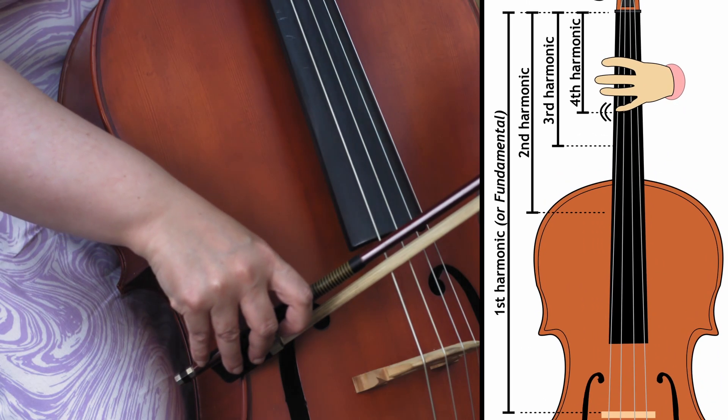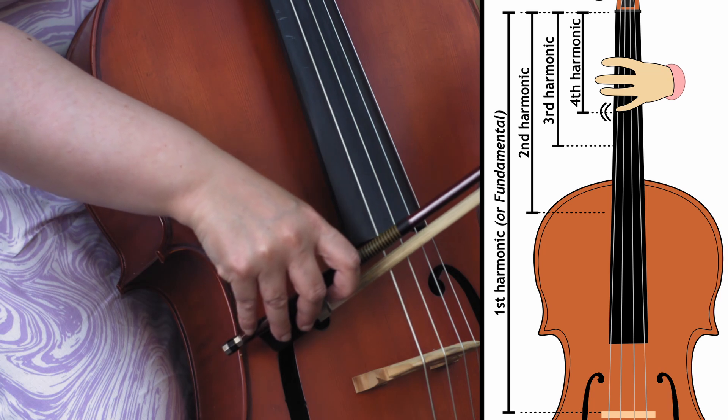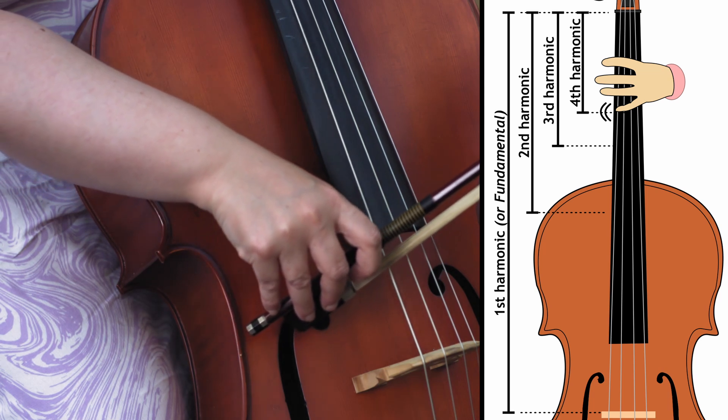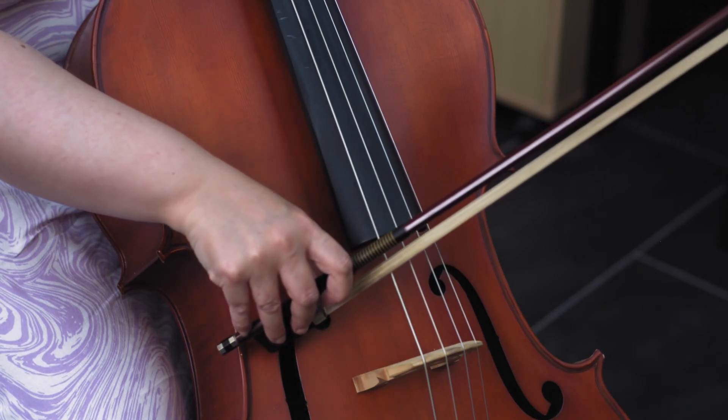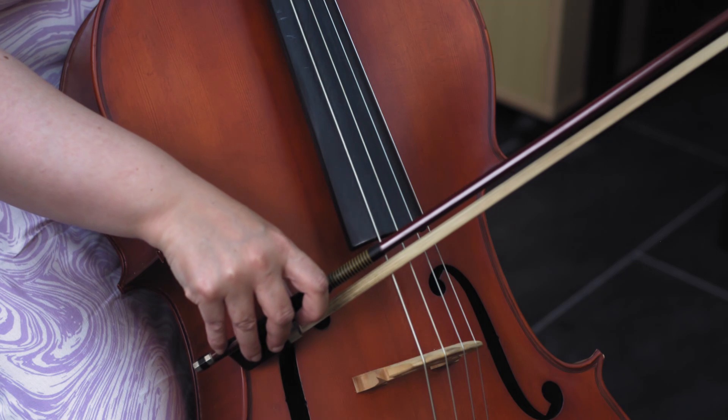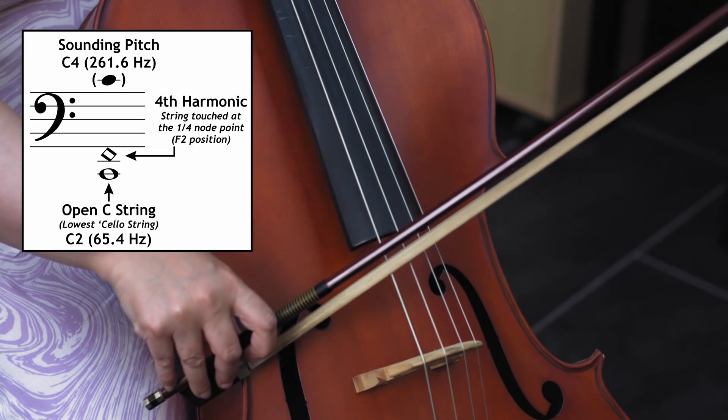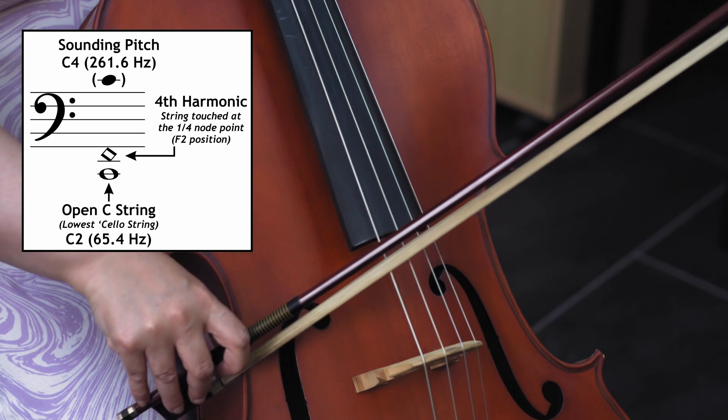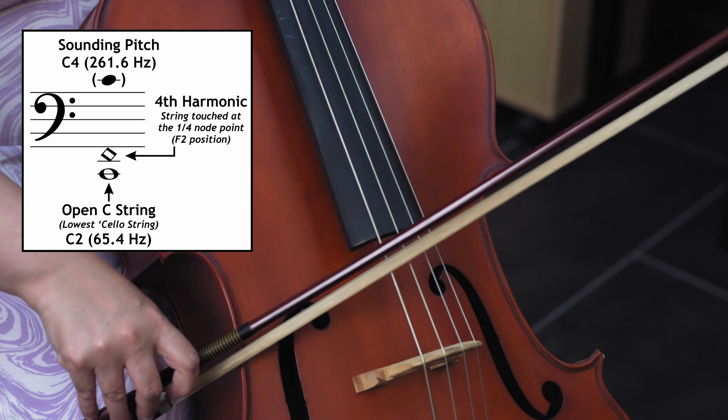But by gently touching the string at this point, it manipulates the low C string into preventing the string's first, second and third harmonics from vibrating. By forcing the string to vibrate in quarters and smaller divisions, the pitch you can hear is two octaves above the string, also known as C4, or for musicians middle C, and its frequency is 261.6 hertz.